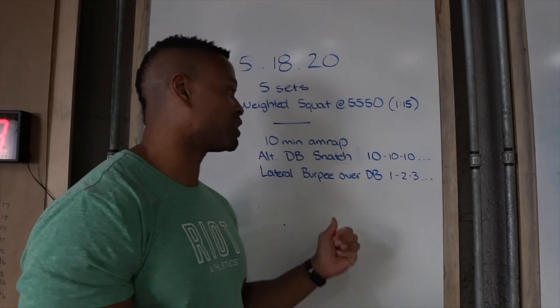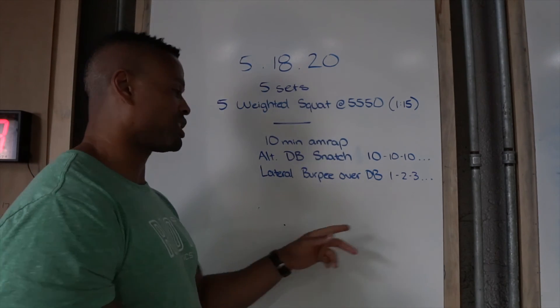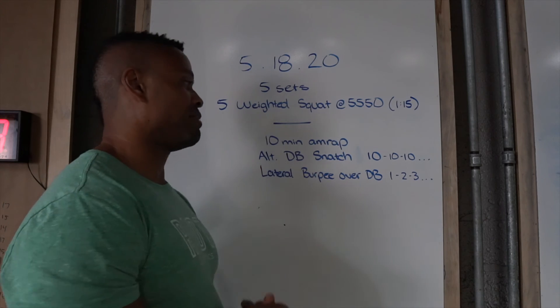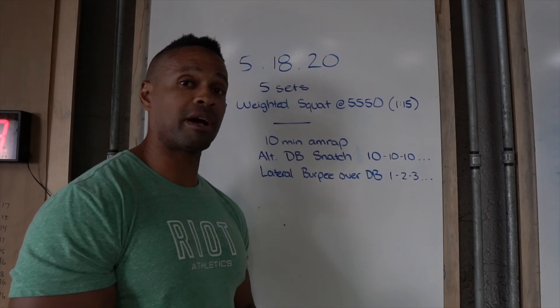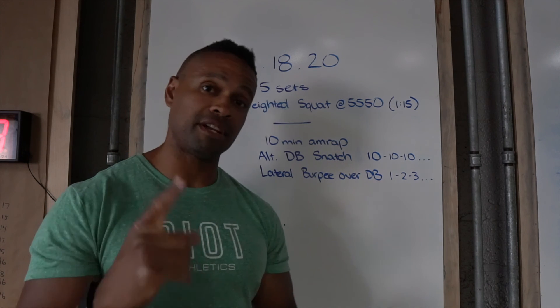Those dumbbell snatches are gonna start to add up, as will those burpees. So just increasing those burpee numbers for 10 minutes. Have fun with both parts of this workout. You will be better for it, I promise. And as always, fitness will prevail.